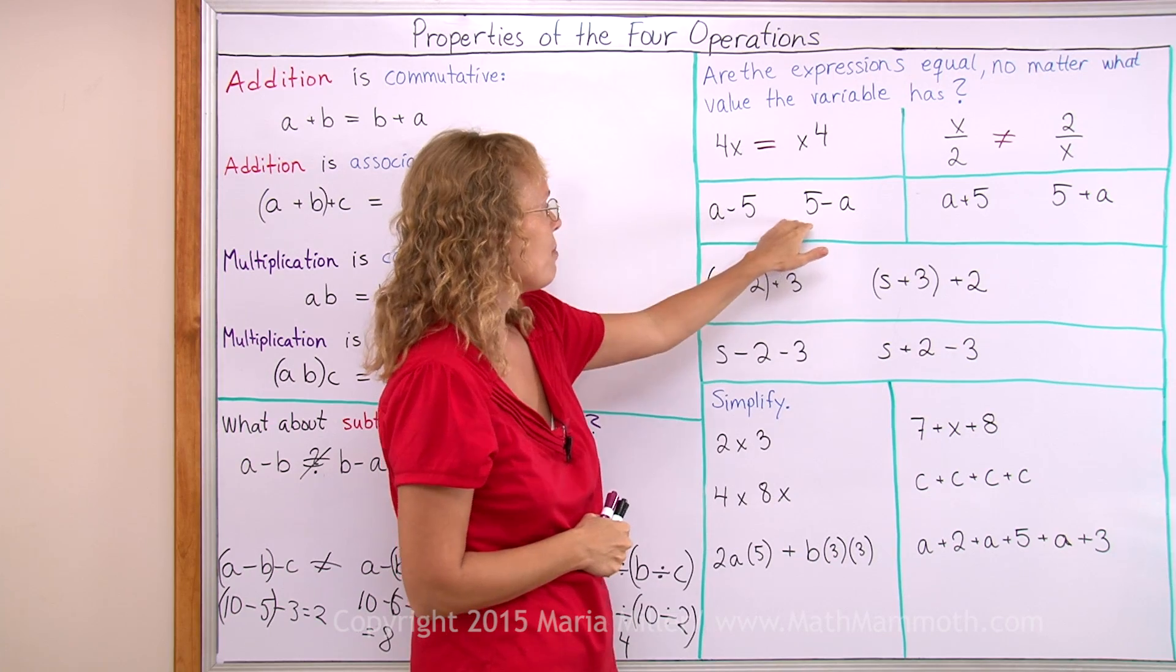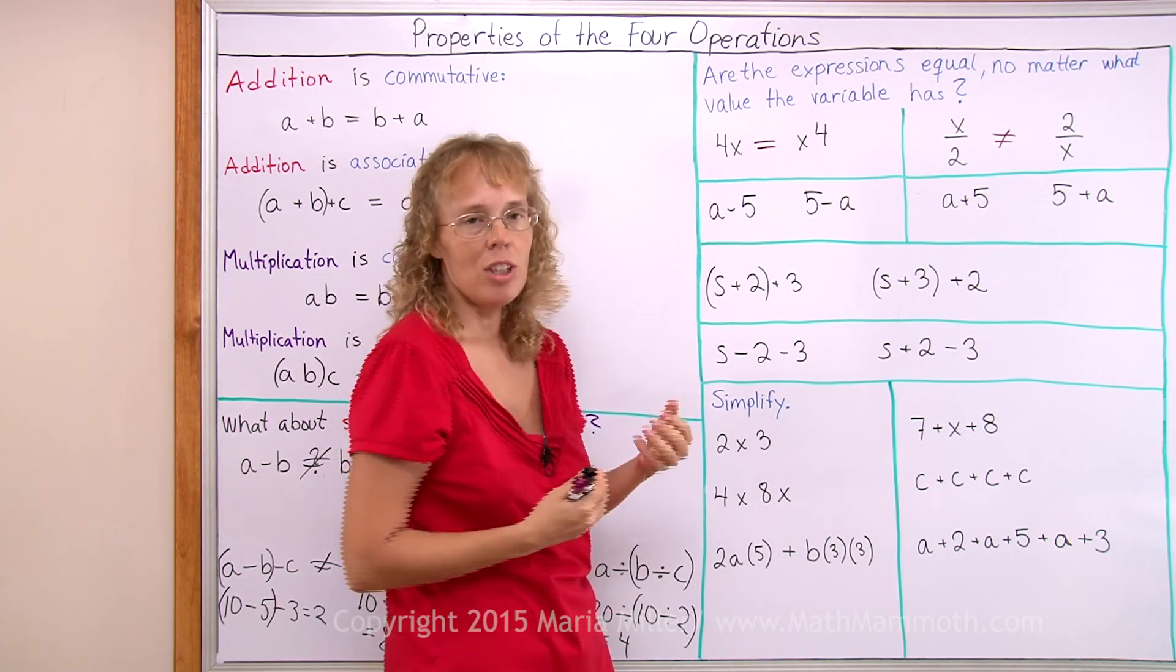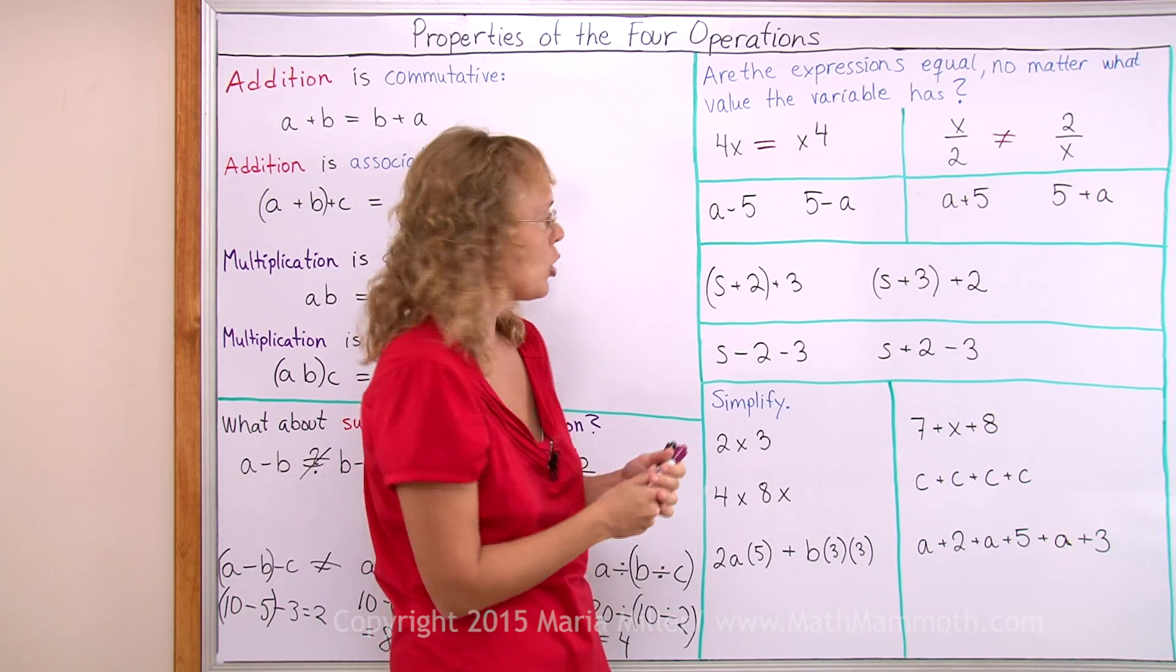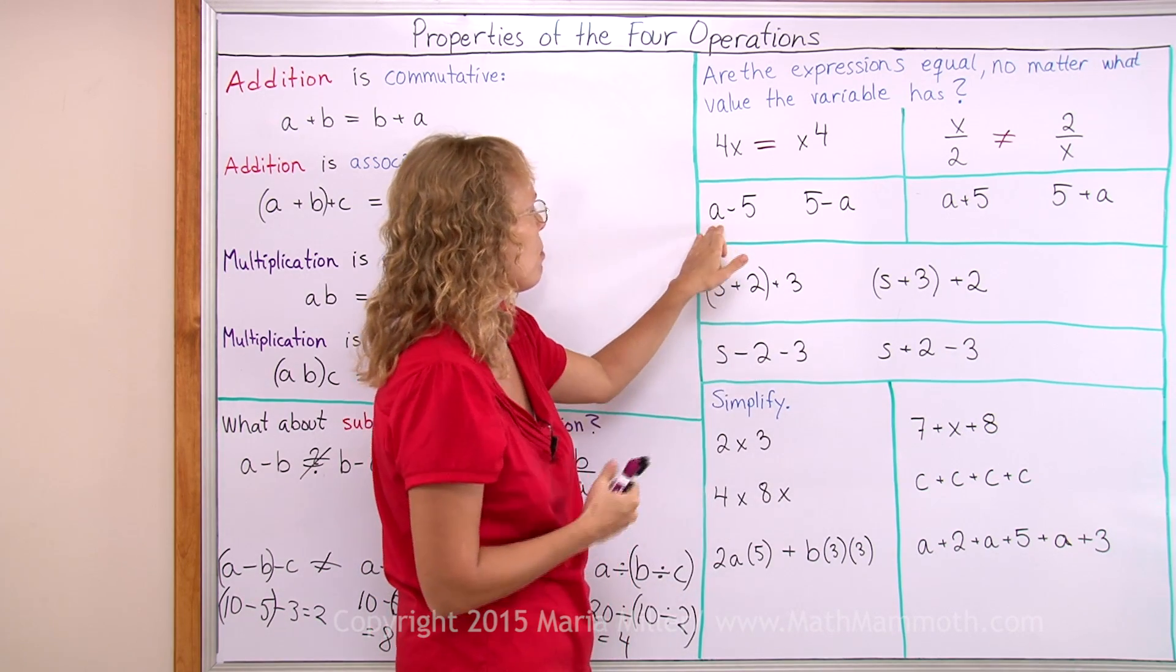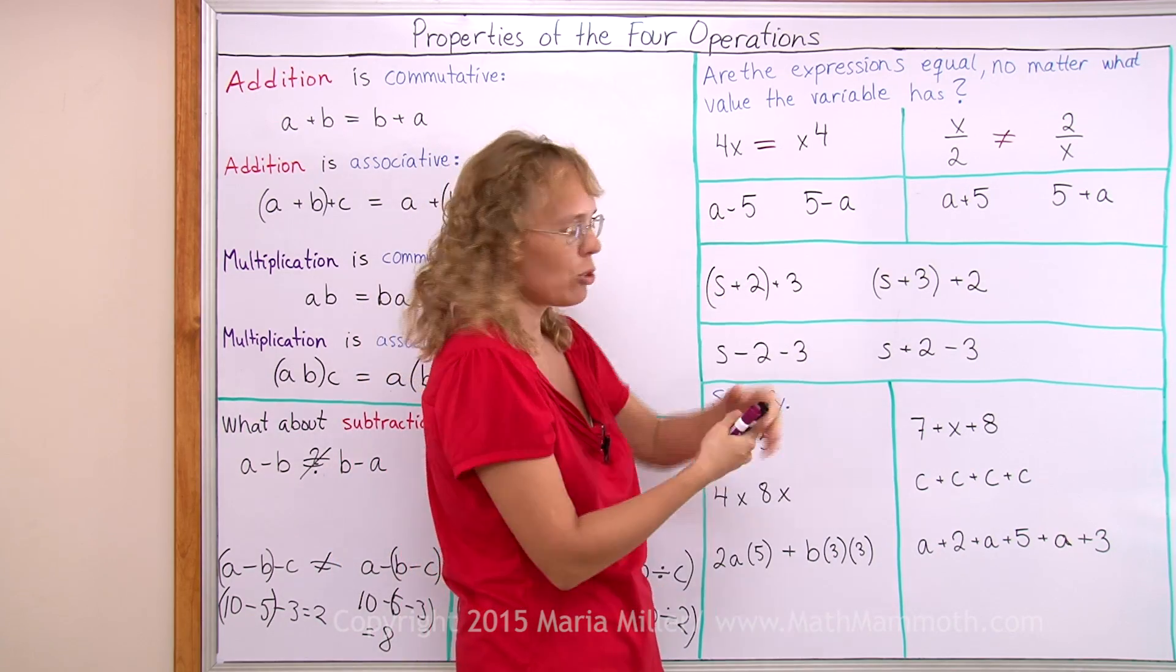Now here is subtraction. And just like I showed you, a subtraction does not have a property called commutative property of subtraction, no. Or you can check it. Give any value like 10, 10 minus 5, 5 minus 10, not equal.